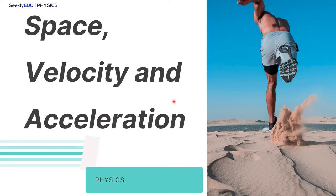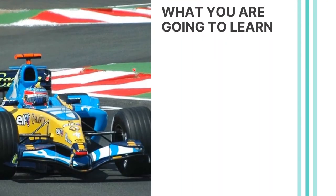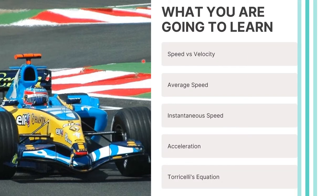Hello everyone! In this lecture we are going to cover the definitions of space, velocity and acceleration. So what are we going to learn today? First, we are talking about the differences between speed and velocity. Then we are going to cover the formulas and definitions of the average speed, instantaneous speed and acceleration. And then we are going through Torricelli's equation.